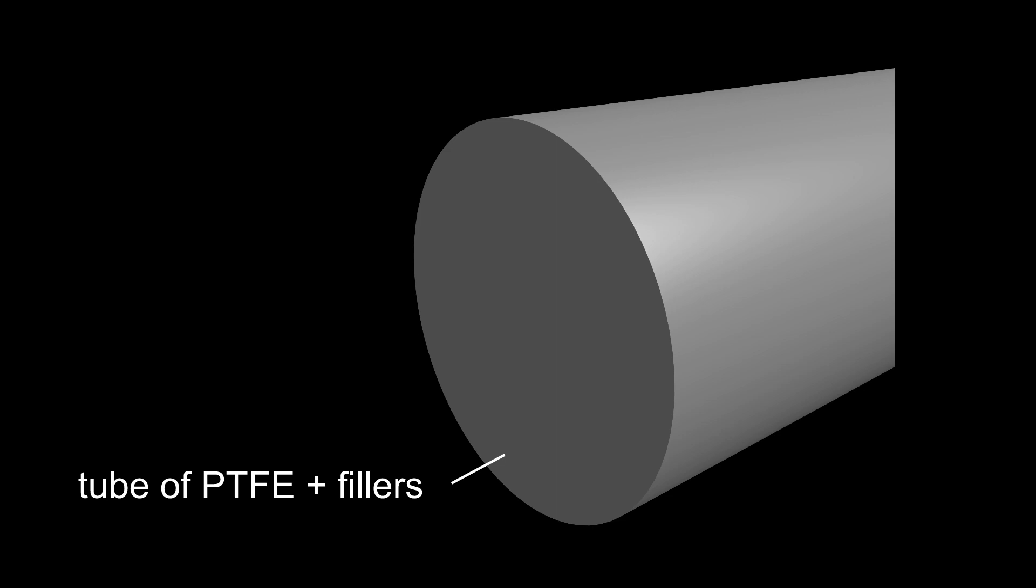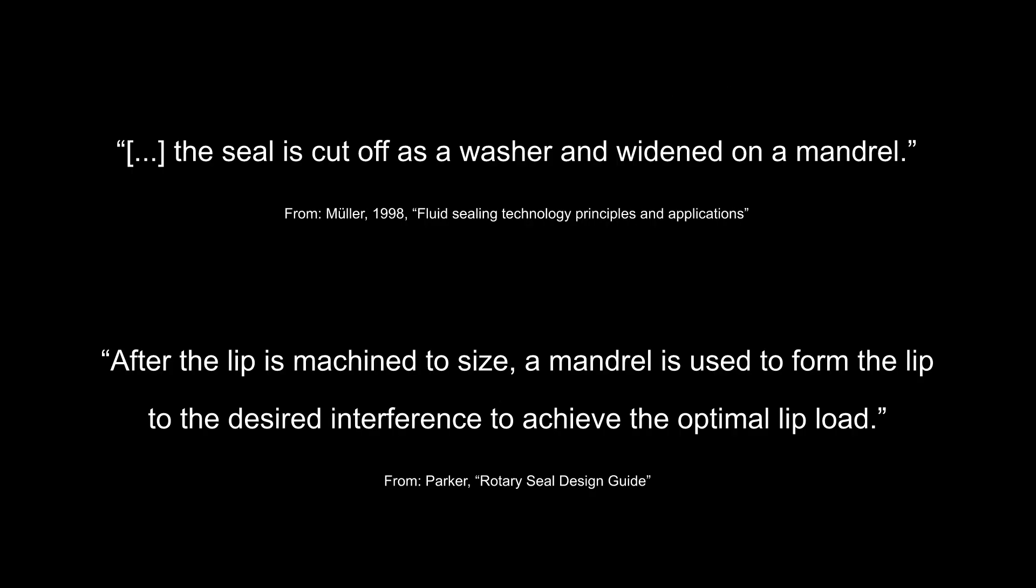First, a tube of PTFE and additives is manufactured using sintering. Next, the seal is cut off as a washer and widened on a mandrel. After the lip is machined to size, a mandrel is used to form the lip to the desired interference to achieve the optimal lip load.